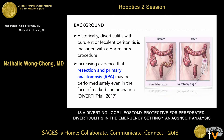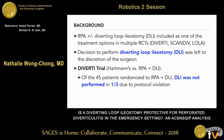Historically, the main method of management of perforated, purulent, or feculent peritonitis for diverticulitis is a Hartman's procedure. As we heard in the last talk on complex diverticulitis management, there is increasing evidence that resection with primary anastomosis may be performed safely even in the face of marked contamination. Resection with primary anastomosis with or without a diverting loop ileostomy has been included as one of the treatment options in several RCTs.